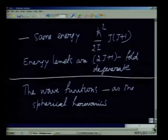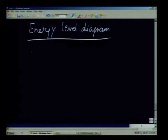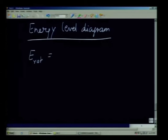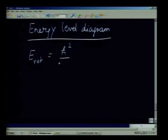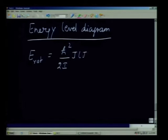Let us look at the energy level diagram for the microwave spectrum. Before I do this, let me introduce the convention that spectroscopy uses. When we write the rotational kinetic energy — the quantum mechanical rotational energy associated with the system — it is h-bar squared divided by 2I, times j(j+1).